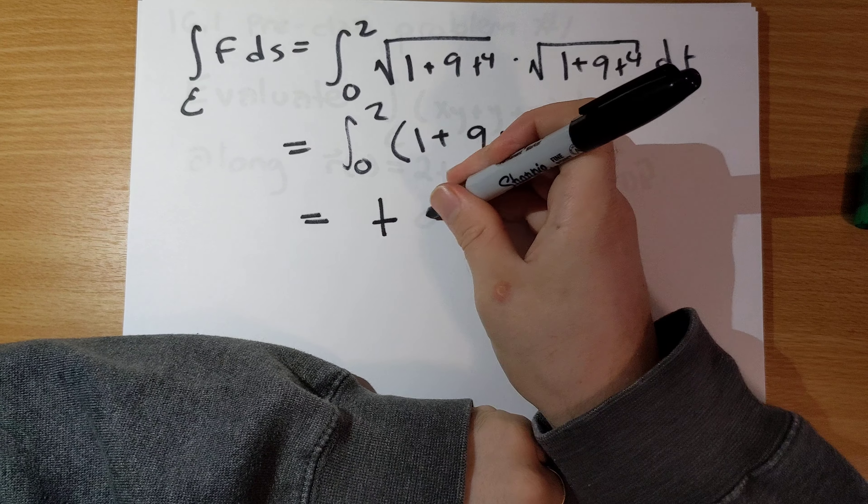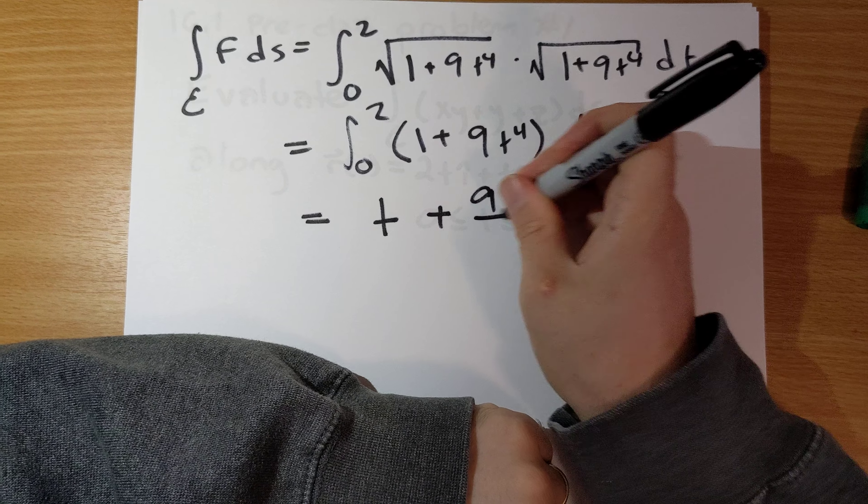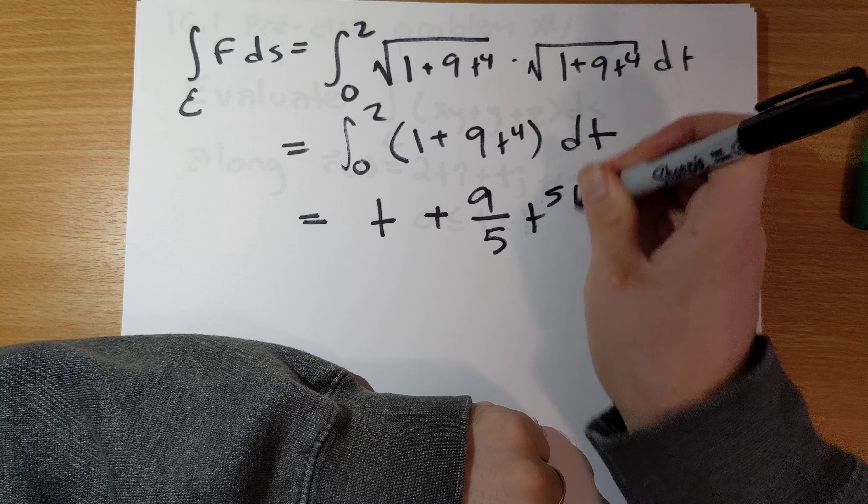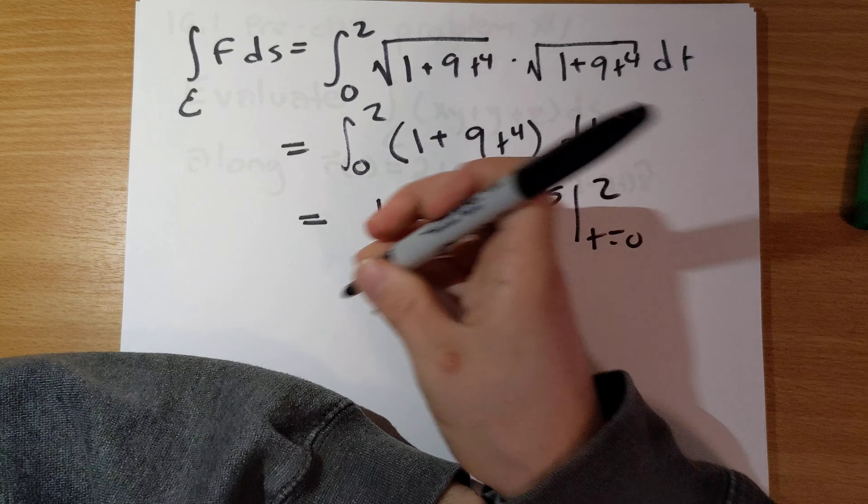dt goes to multiply together, and so the integrand is just 1 plus 9t to the fourth.